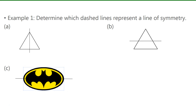In example one, we have to determine which dashed lines represent a line of symmetry. In A, if you folded it over, this point would match with this point. So this is indeed a line of symmetry.